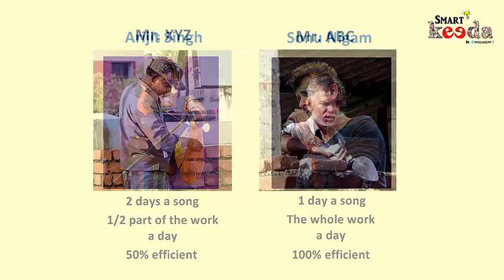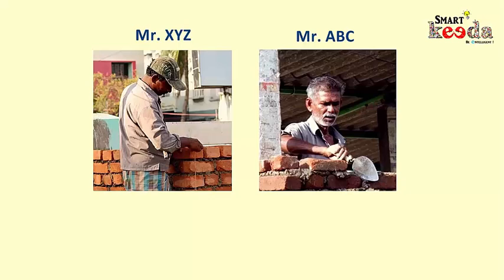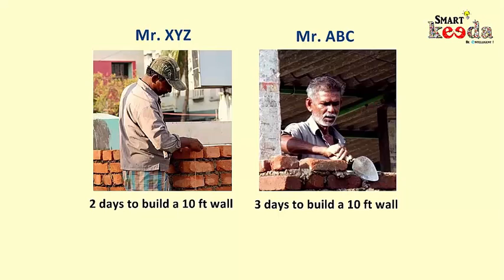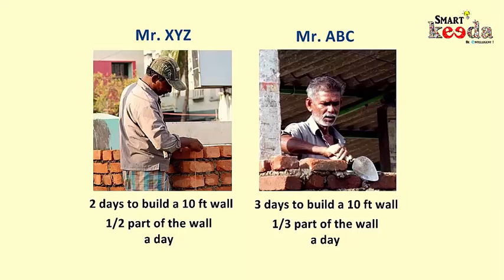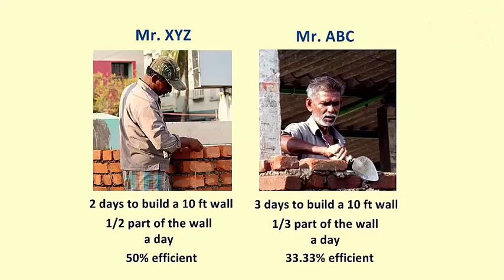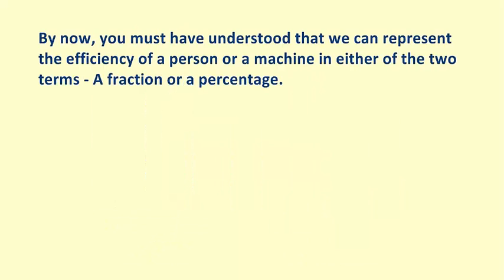Let's take another example. On the left is Mr. XYZ and on the right is Mr. ABC — both are very good masons. Mr. XYZ takes two days to build a 10-feet wall while Mr. ABC takes three days to do the same piece of work. This means Mr. XYZ does one-half part of the work a day while Mr. ABC does one-third part. In percentages, Mr. XYZ's efficiency is 50% while Mr. ABC's efficiency is 33.33%. We can represent the efficiency of a person or a machine in either of two terms.